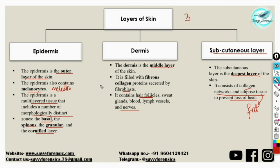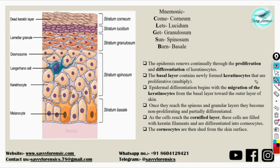Let's discuss in a bit more detail about the epidermis layer and how it acts as a source of evidence. Here is a more detailed diagram showing the layers of the epidermis with their scientific names. The basal layer is also called the stratum basale, then the stratum spinosum, above which is the stratum granulosum, then the stratum lucidum, and the stratum corneum which is the outermost layer.